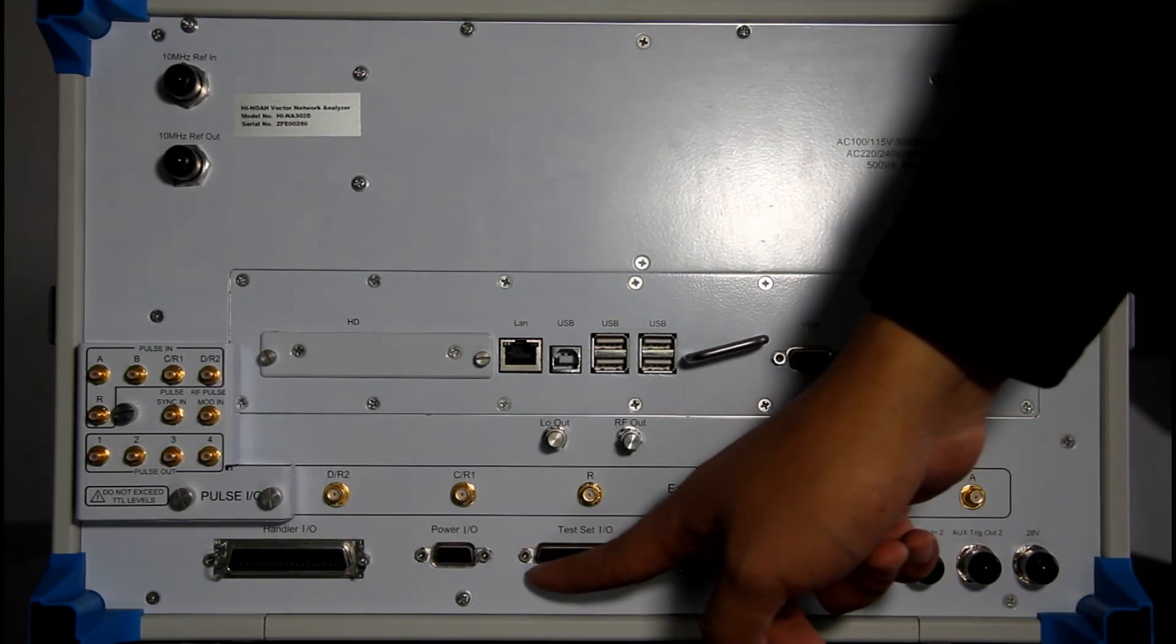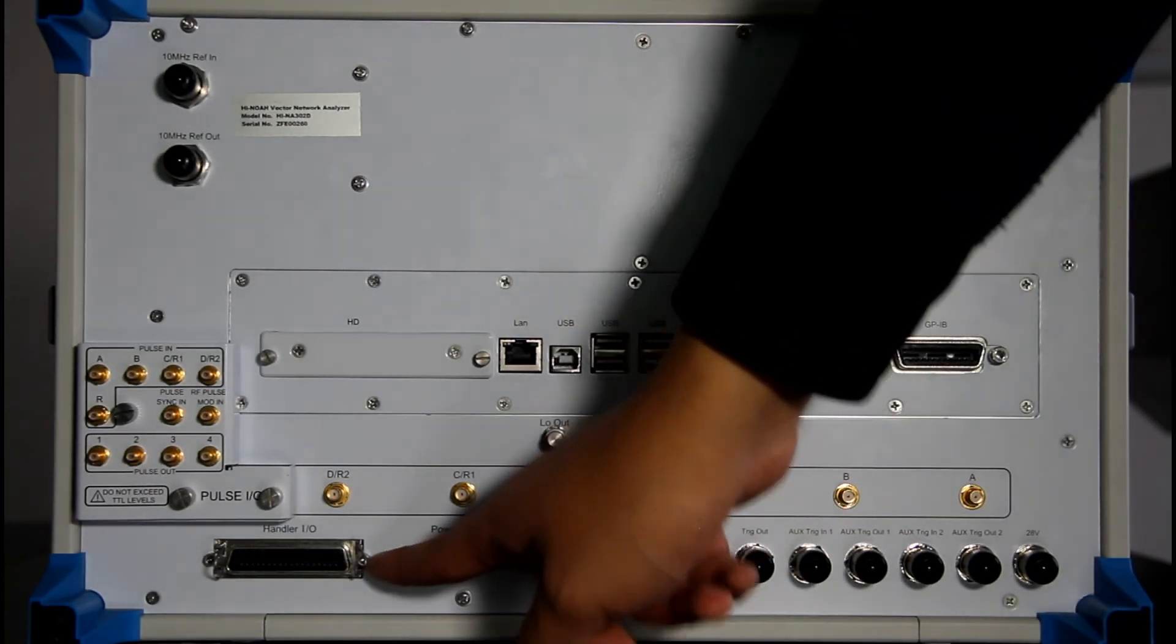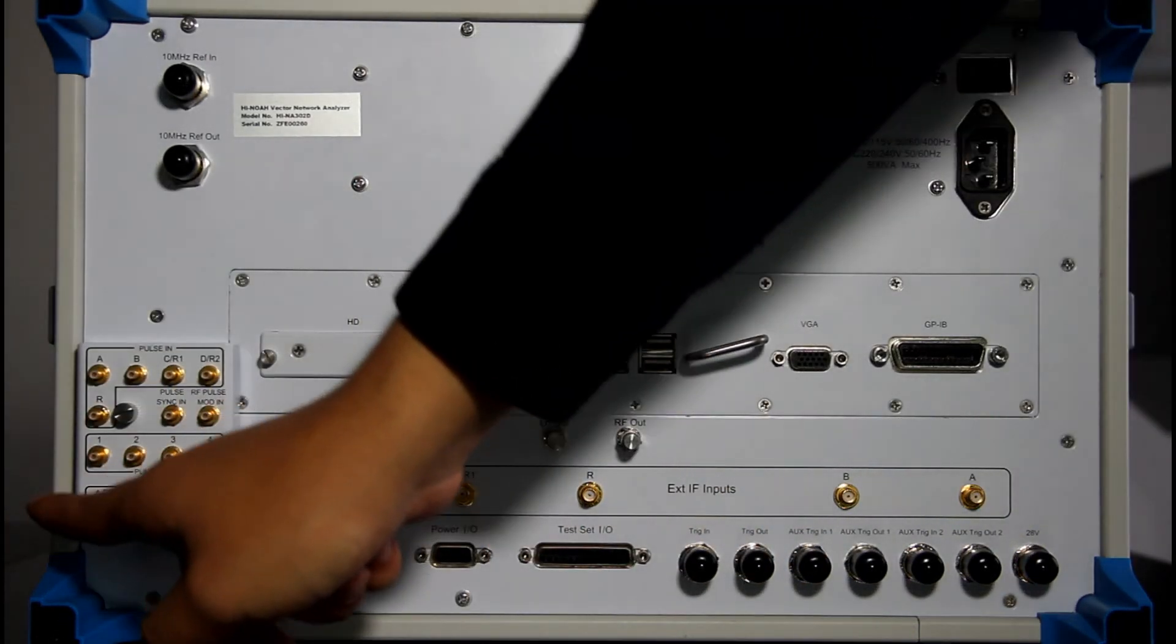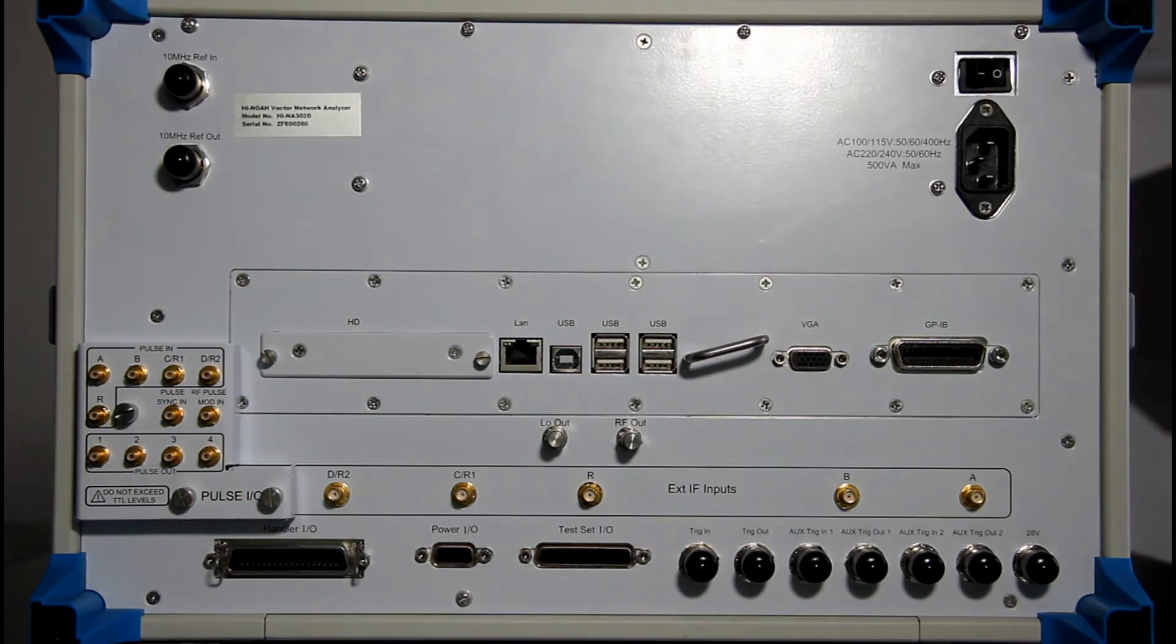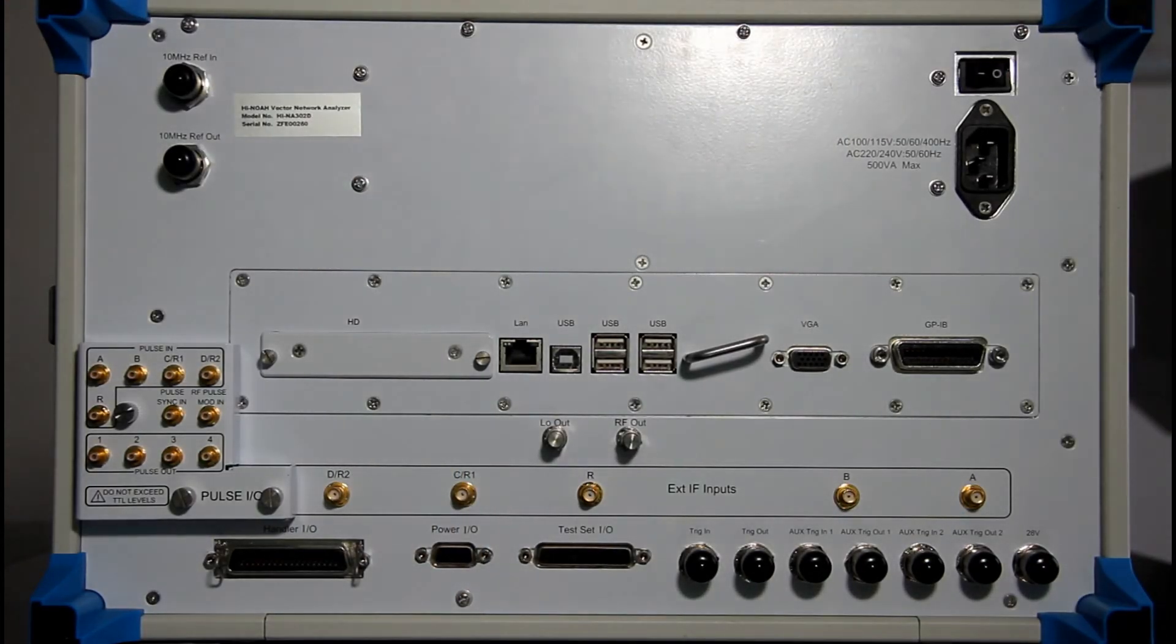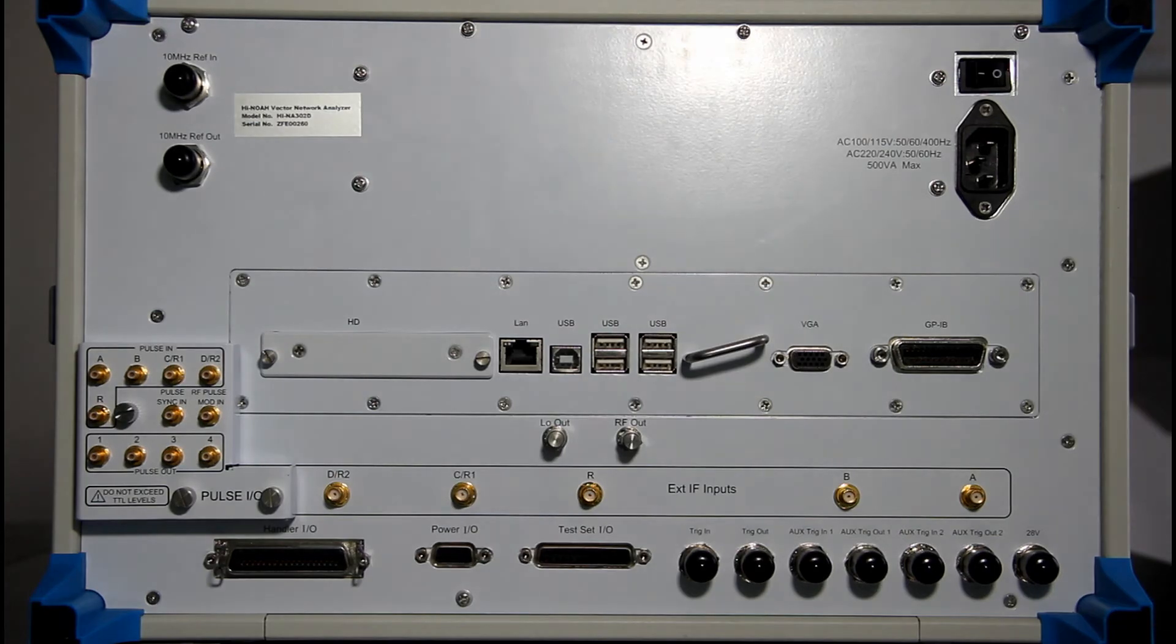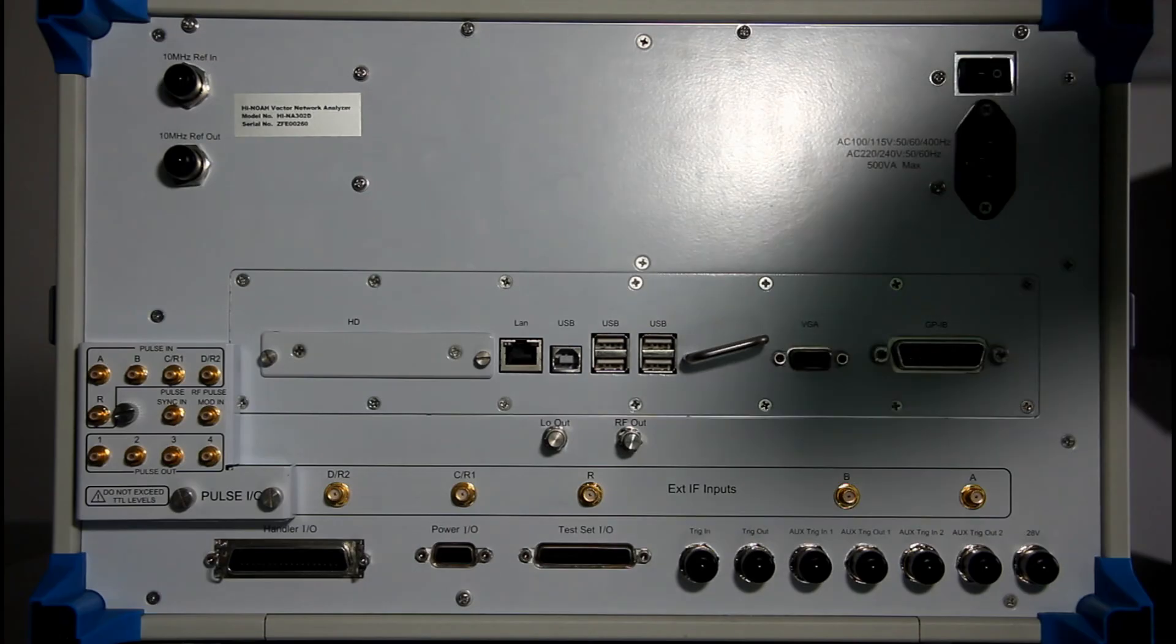So this interface is the test set interface. And this one is the power input and output. And this one is the handler input and output. So this square is all about the pulse input and output. There are four foots on each corner of the rear panel. These four foots will protect all these interfaces during transportation. Okay, that is almost all for the rear panel.